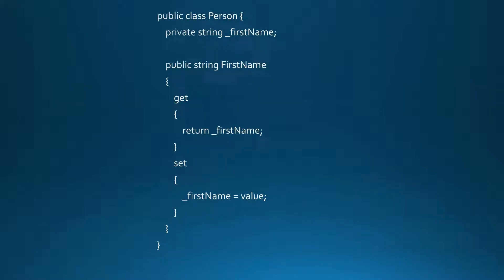To hide the internal state of an object we use private fields. They can be accessed only by methods contained inside the class. Let's see an example. Here we have a public class named Person. This class has one private field, FirstName. It's private, so it can only be accessed from within the class.